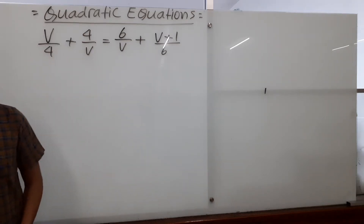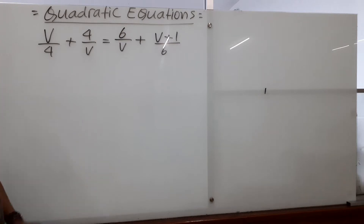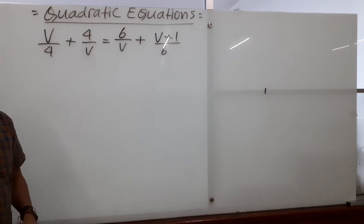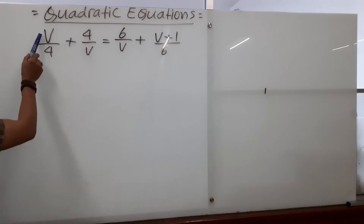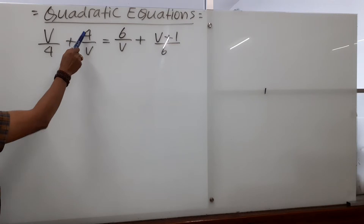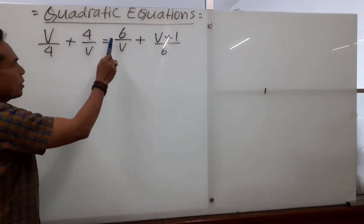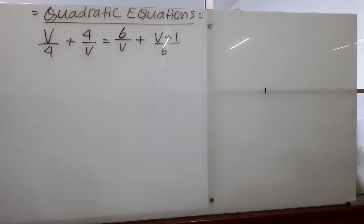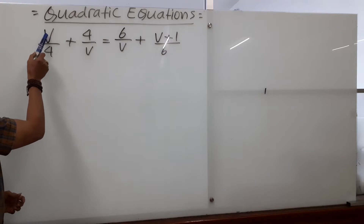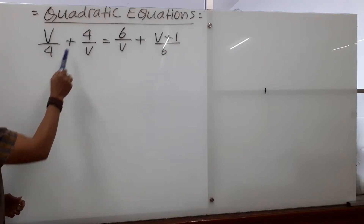Hello friends, welcome back to my channel. Today we want to look at quadratic equations. I have a question on the board here — let's look at it together and see how we solve this kind of question. The equation is v over 4 plus 4 over v equals 6 over v plus v plus 1 over 6. To solve this kind of question, we can cross multiply.